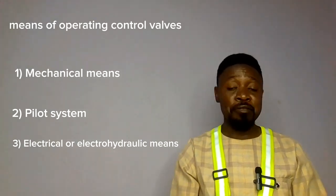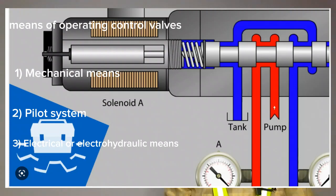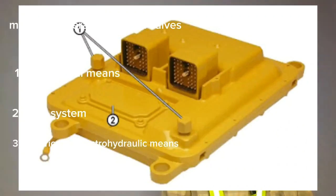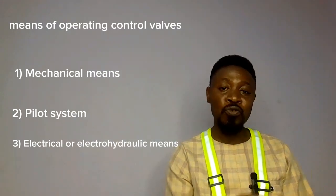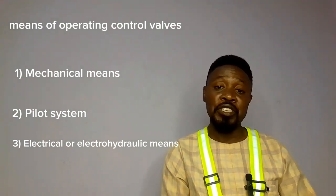When we talk about the electrical system, the spool in the control valve may employ a solenoid on both sides or on one side, depending on the arrangement. A current will be sent from the operator's lever, where the operator's movement is converted into an electric signal. This electric signal is sent to the ECM, or electronic control module. The electronic control module decodes this signal and then decides how much current it sends to the solenoid to move the spool, continue to move it, stop it, or retract it, depending on the arrangement of the solenoid.